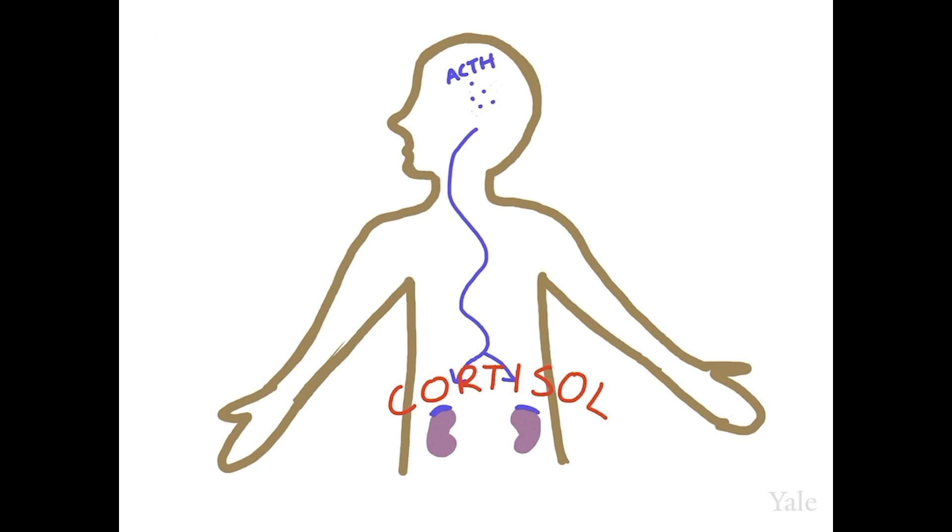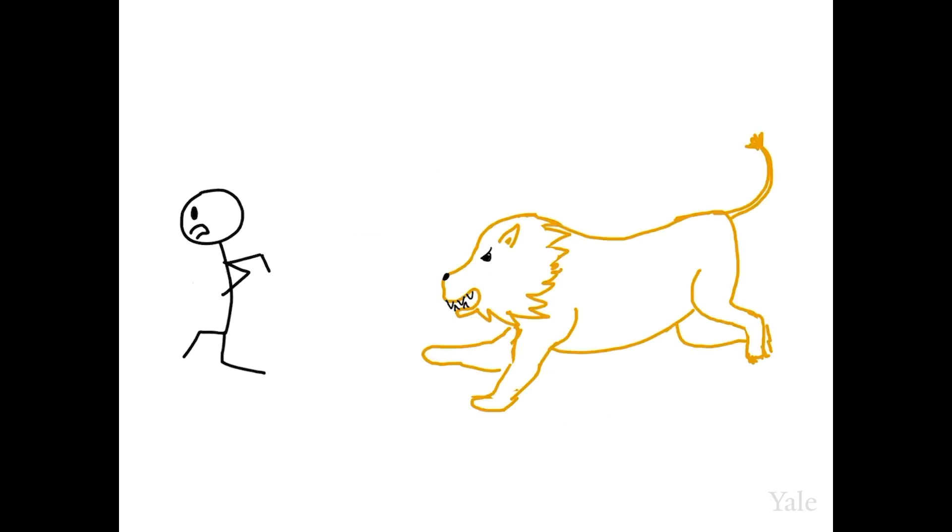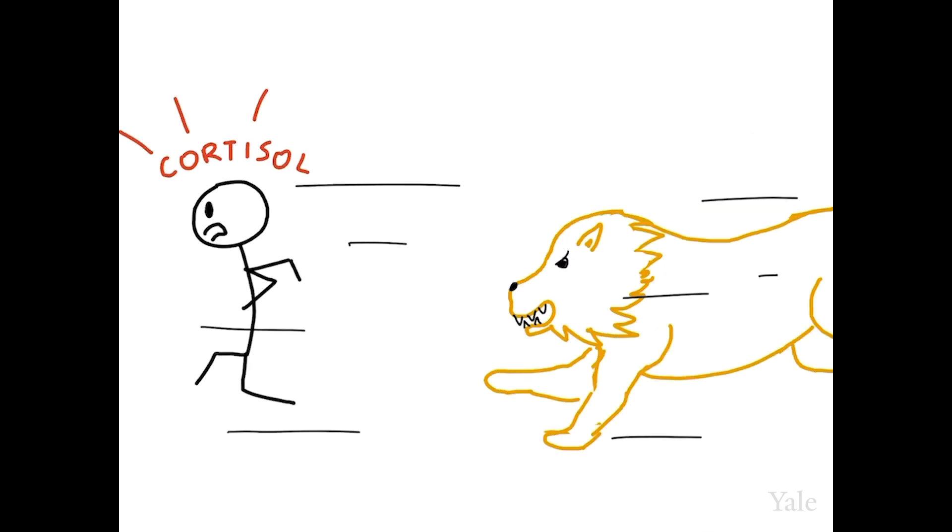Cortisol regulates many physiological processes that, from an evolutionary perspective, are meant to help you respond to a perceived threat. For instance, cortisol stimulates the liver to produce glucose, increasing your glucose availability should you need the extra energy to fight or run. We evolved to have an automatic defense system that's probably more helpful for dealing with a predator in the wild than, say, public speaking.